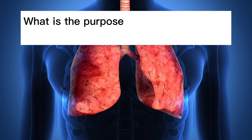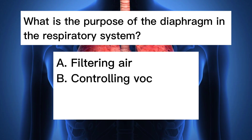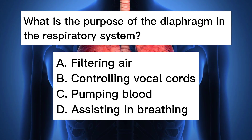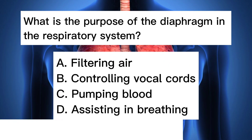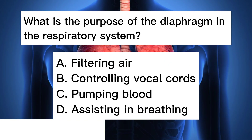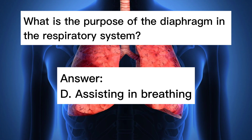What is the purpose of the diaphragm in the respiratory system? A. Filtering air. B. Controlling vocal cords. C. Pumping blood. D. Assisting in breathing. Answer: D. Assisting in breathing.